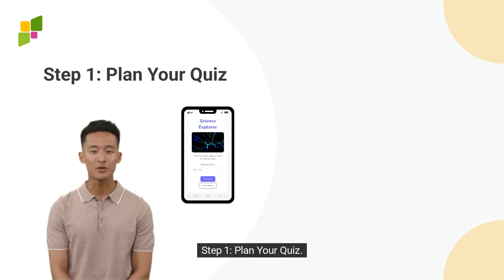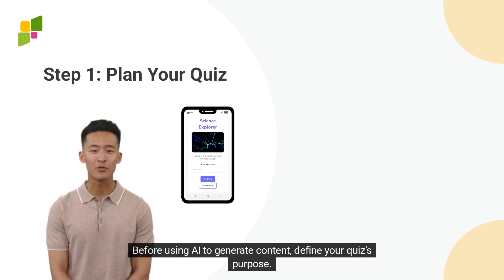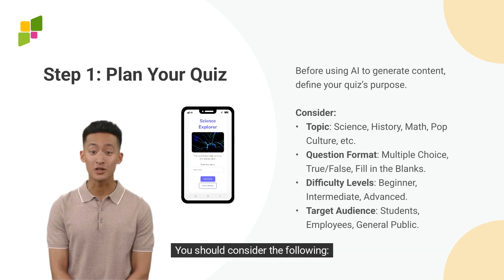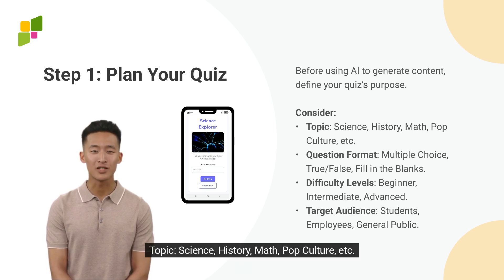Step 1: Plan your quiz. Before using AI to generate content, define your quiz's purpose. You should consider the following topic: science, history, math, pop culture, etc.